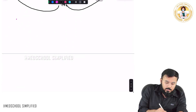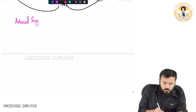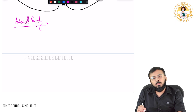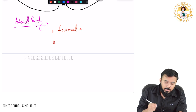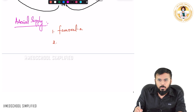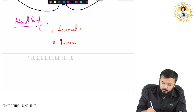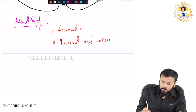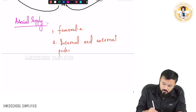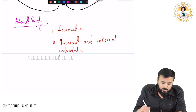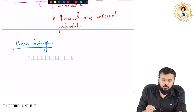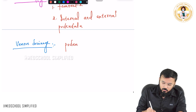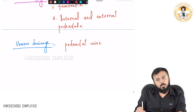Now if you look at the arterial supply, there are two important arteries: branches of the femoral artery also supply this vulva, and branches of the internal and external pudendal artery as well. When it comes to the venous drainage, pudendal veins carry the venous blood from this region.